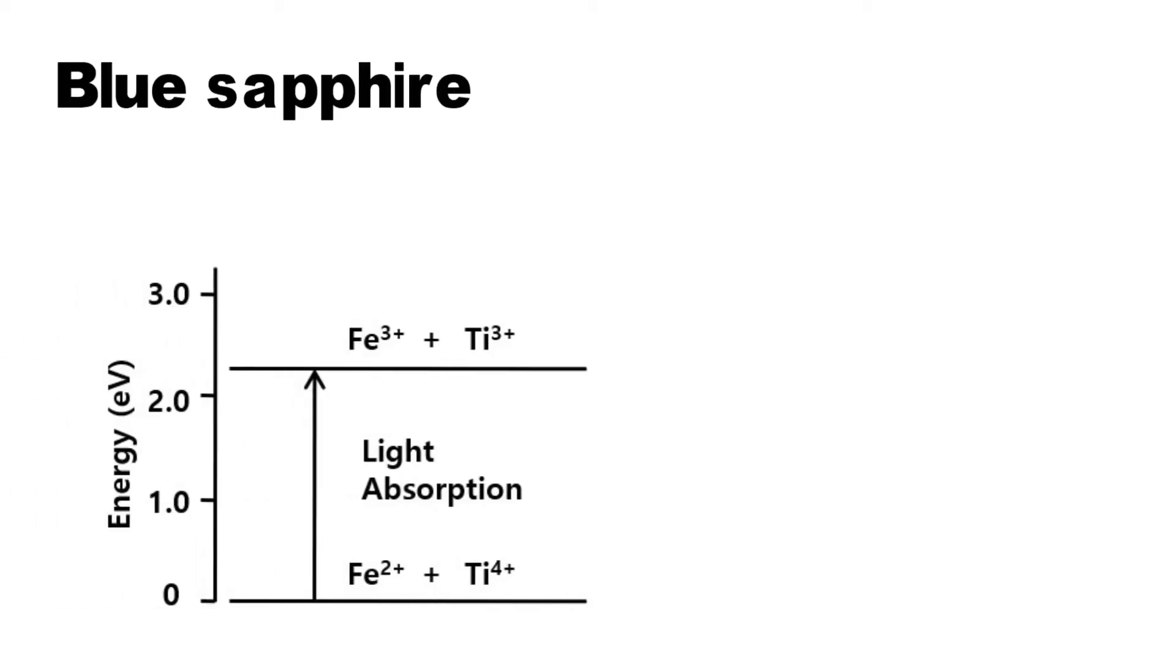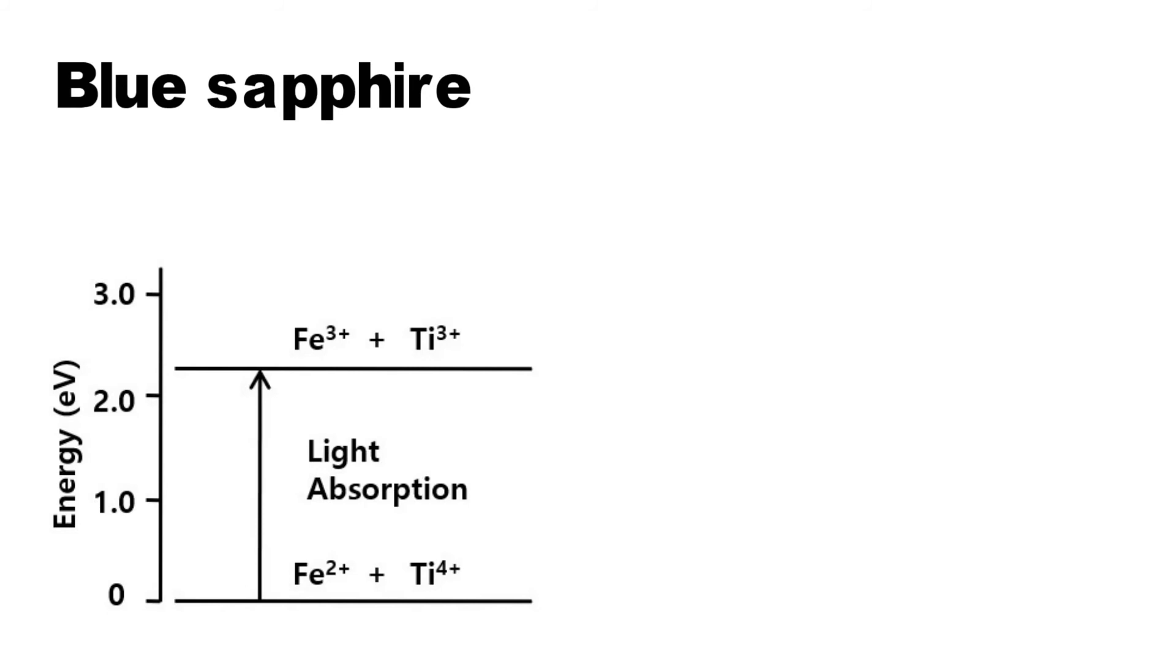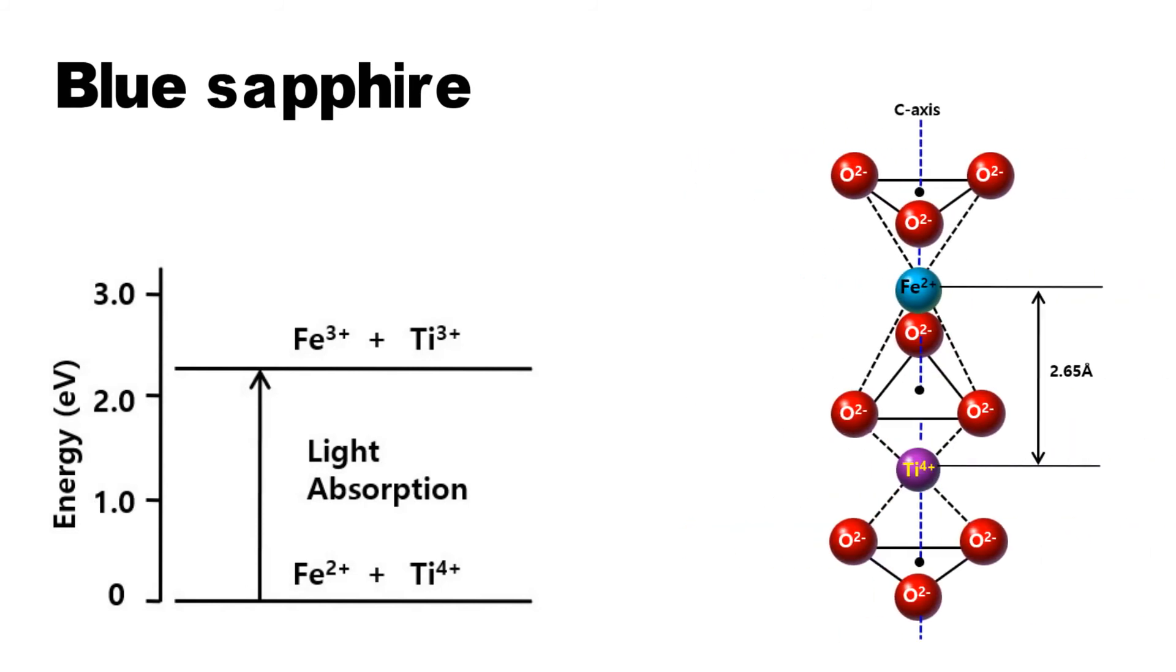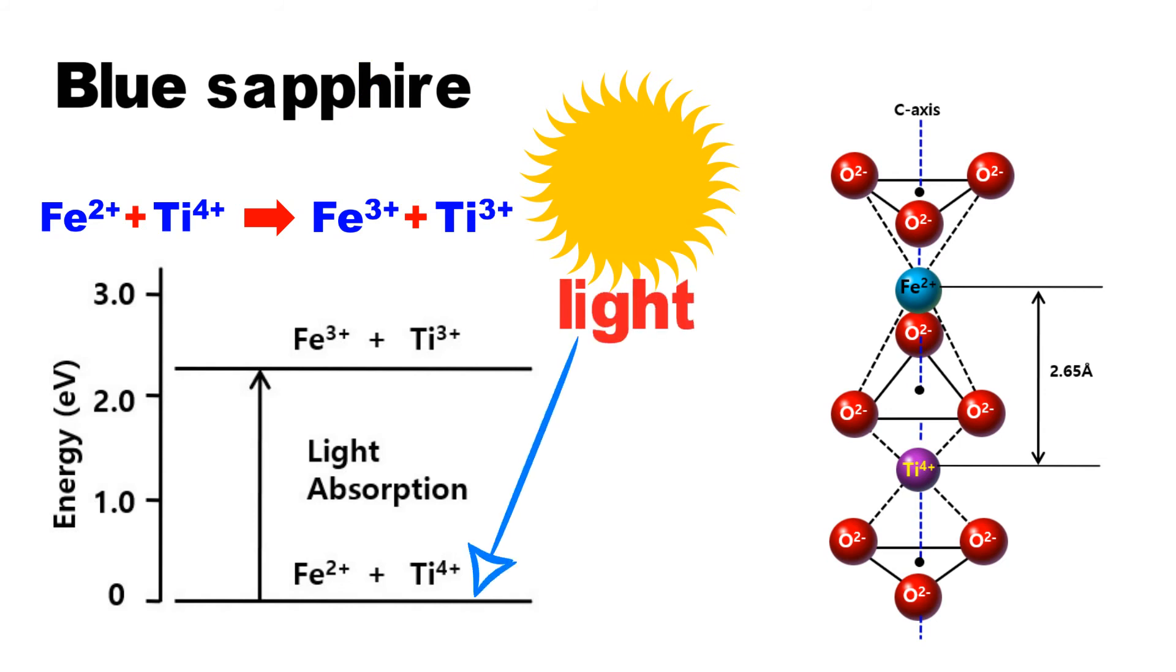In other words, when light illuminates the blue sapphire, Fe²⁺ iron and Ti⁴⁺ titanium ions will interact with each other as follows: Fe³⁺ plus Ti³⁺. Their energy gap is 2.11 electron volts. As a result, the absorption occurs near 580 nanometers.